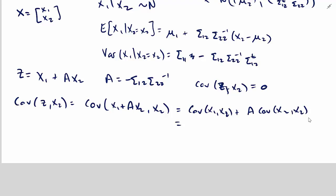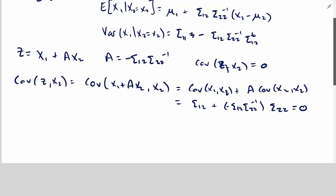So that's equal to covariance of x2 is sigma 1 2 plus a, which I've defined as negative sigma 1 2, sigma 2 2 inverse. And covariance of x2 and x2 with itself is sigma 2 2. So I think you can pretty much see at this point that this equals zero. So z is independent of x2.